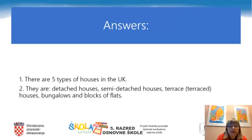The answers are: There are five types of houses in the UK. There are detached houses, semi-detached houses, terrace or terraced houses, bungalows, and blocks of flats.